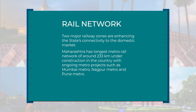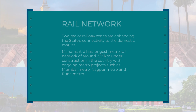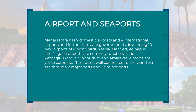Two major railway zones enhance the state's connectivity to the domestic market. Maharashtra has the longest metro rail network — around 233 km — under construction in the country, with ongoing projects such as Mumbai Metro, Nagpur Metro, and Pune Metro. The state has seven domestic airports and four international airports, and the state government is developing 10 new airports, of which Shirdi, Nasik, Nanded, Kolhapur, and Jalgaon are currently functional. The state is also well connected to the world via sea through two major ports and 53 minor ports.